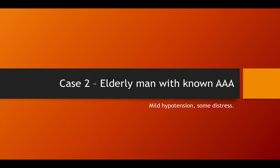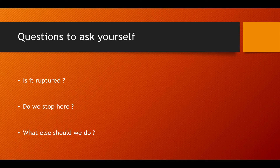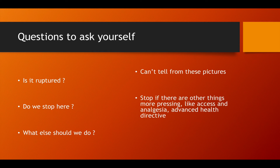The second case is an elderly patient with a known AAA who comes in with mild hypotension and some distress. In this one it's pretty definitely a AAA in transverse and in long axis. But the questions we have to ask are: is it ruptured? Is that what's causing the pain and hypotension? Do we stop with just these two pictures? It really depends on how much help you've got. If it's more important to give this patient a cannula and analgesia, put the probe down.